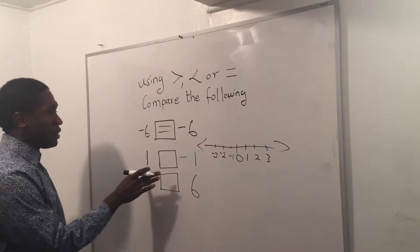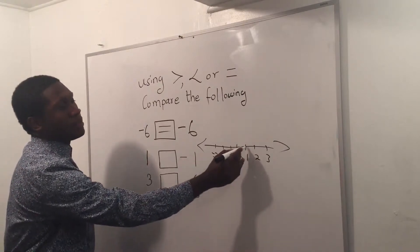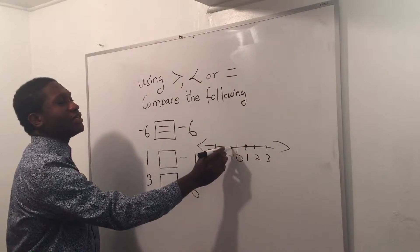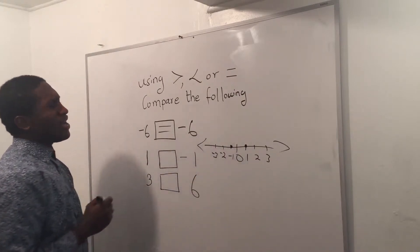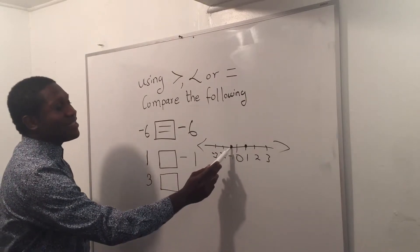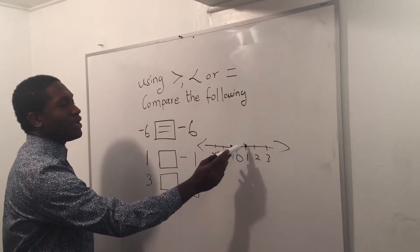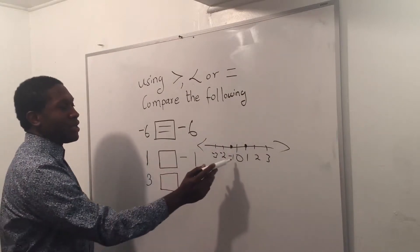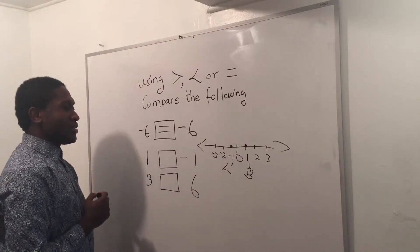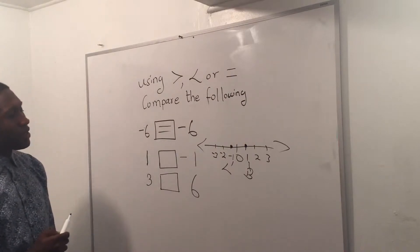Now that I have my number line, I want to put a point where I see these two numbers. This one is right here and this negative one is right there. I learned that the number on the left is lower and the number on the right is bigger. So negative one is lower and positive one is bigger.